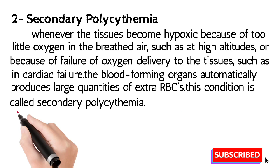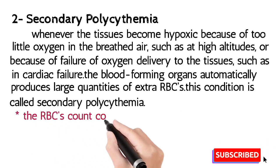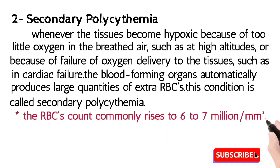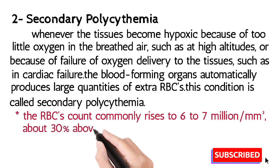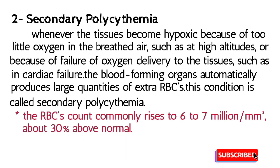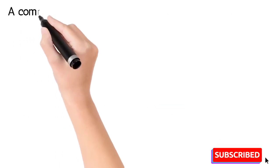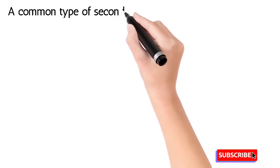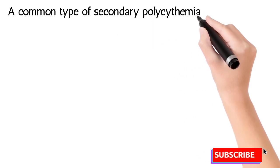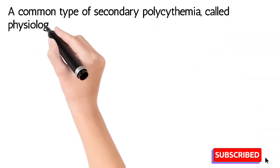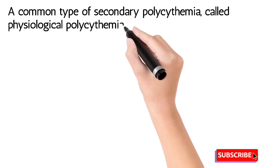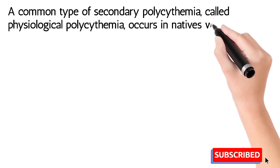In secondary polycythemia, the RBC count commonly rises to six to seven million per millimeter cube, about 30 percent above the normal RBC count. This is the body's compensatory mechanism, by which it compensates for the low oxygen level in the body and regulates normal functions.